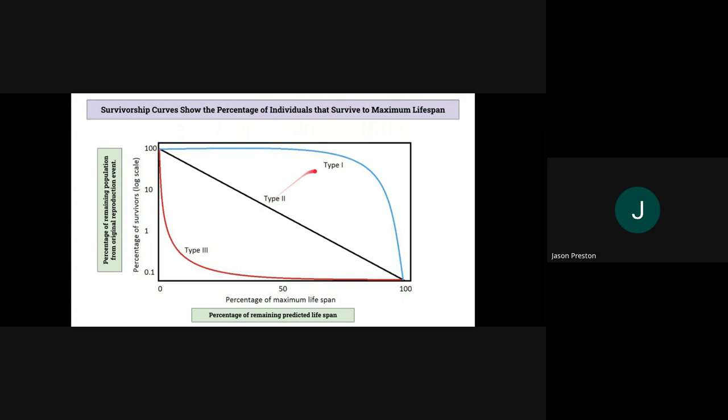This right here is a survivorship curve, and essentially what it does is it shows you the percentage of a population that will survive to the maximum lifespan within the organism species.